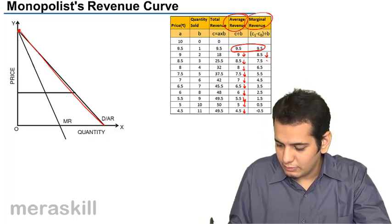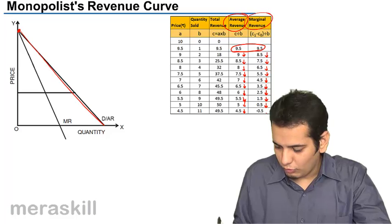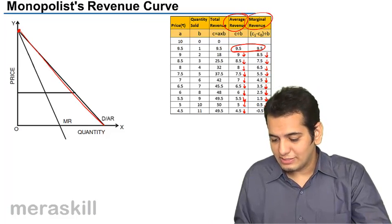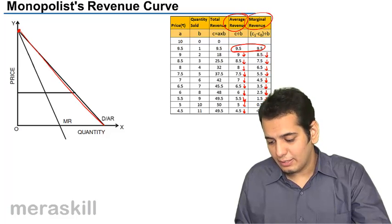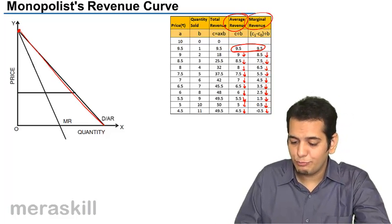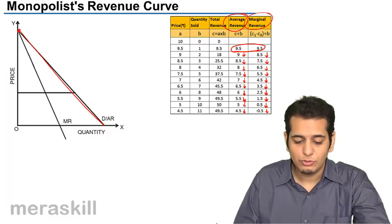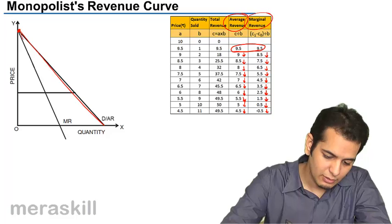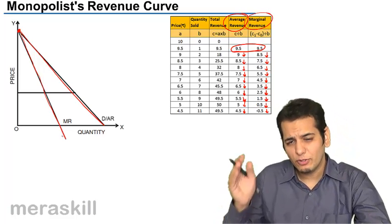The same would be the case for marginal revenue — it is falling at all levels. But you can see that it is falling at a higher rate. It was 9.5 when one unit was sold, it is 8.5 when the second unit is sold. However, at that level you can see the average revenue is 9. Again, it is 7.5 when 3 units are sold, while average revenue is 8.5. So we know that the marginal revenue curve is falling at a higher rate, meaning it will be a curve which is inside the average revenue curve.